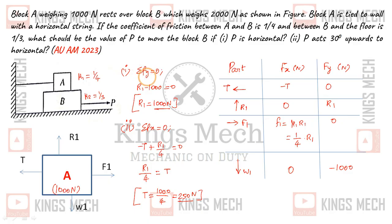Applying summation of forces in y-direction equal to zero: R1 minus 1000 equals zero. Therefore R1 equals 1000 Newton.